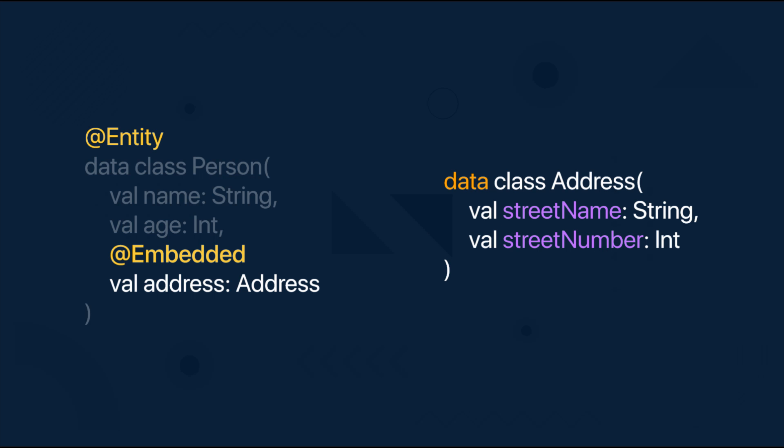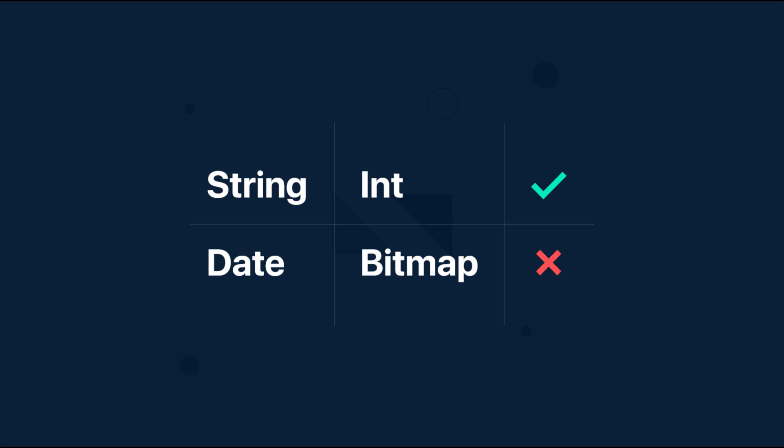In our Entity class we can annotate our own custom object with this annotation and the compiler will basically take fields from that custom object and embed them into our Entity like they were already defined in our Entity class. But there is a catch — this will only work if the fields from that specific annotated object have acceptable types which are already defined in Room library.